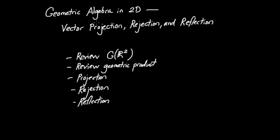We're going to continue the discussion of geometric algebra of two dimensions. In this video, we'll talk about how to project vectors, reject vectors, and reflect vectors. The outline is as follows: first we'll review the abstract objects we've constructed up to this point in GR2, the geometric algebra of R2. Then we'll review the geometric product, talk more about the dot product and wedge product, and derive formulas for projection, rejection, and reflection of vectors.